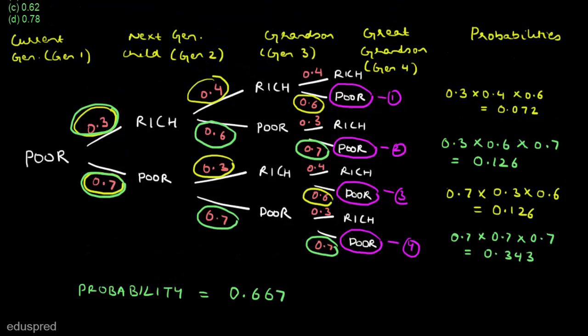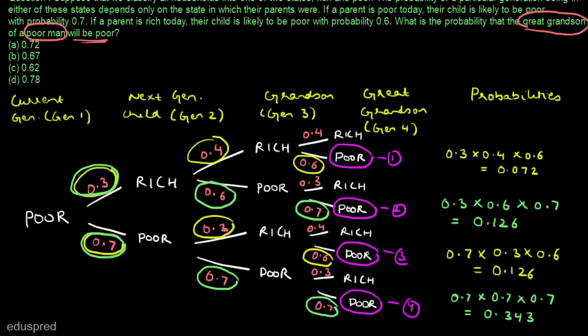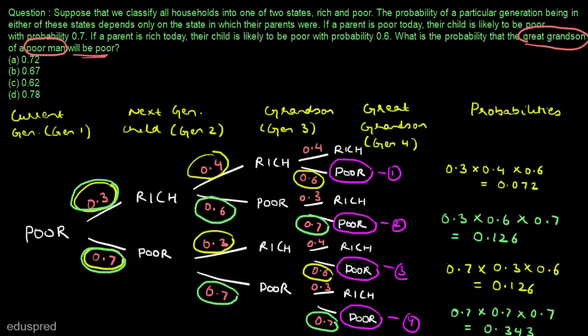So the probability that the great grandson of a poor man will be poor is 0.667. That means option B is the answer. And this is all for this question.